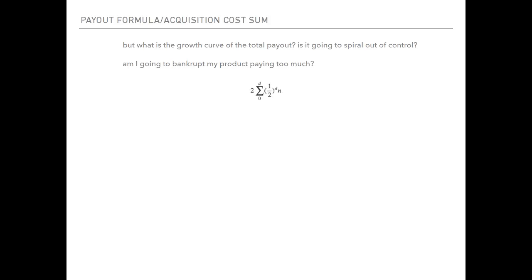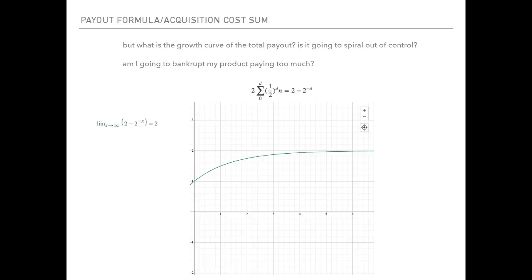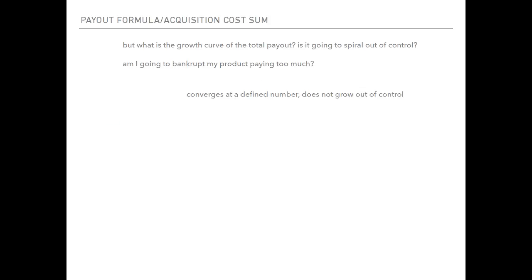The answer to that is, let's calculate it. The formula for reward is essentially this—basically simplifying that. We take the limit of this, and we can see that it's not a linear growth, it's not an exponential growth. In fact, it doesn't even go up towards the right, so it doesn't grow at all. It converges at 2. As you can see, your payout eventually is going to stop at a certain point. This solves the problem—it's not going to spiral out of control, so you don't have to worry about bankrupting, going broke because you're paying too much out for your referral program.